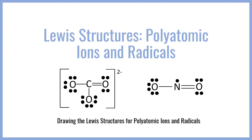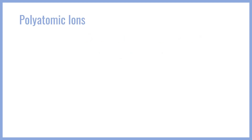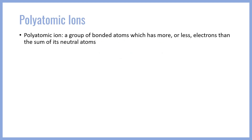However, the basic premises are the same; there are just some intervening steps that need to be taken care of. Let's go ahead and get started. First and foremost, what is a polyatomic ion? Well, a polyatomic ion is a group of bonded atoms which has more or less electrons than the sum of its neutral atoms.